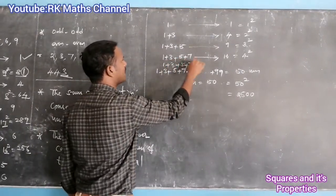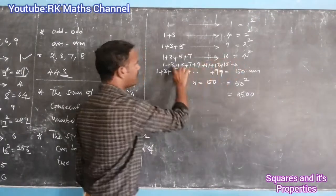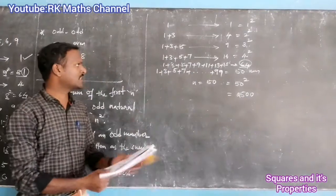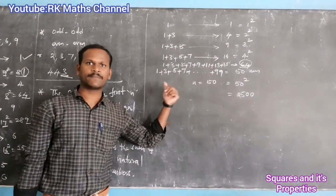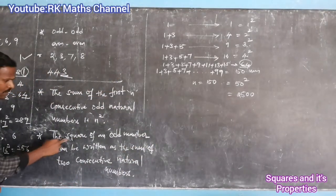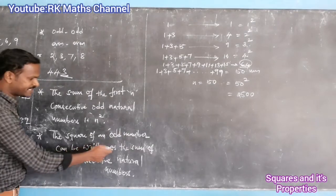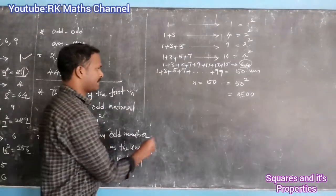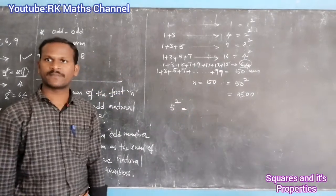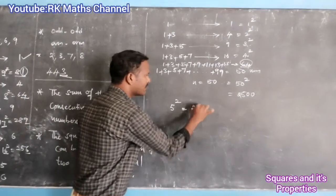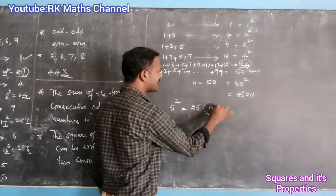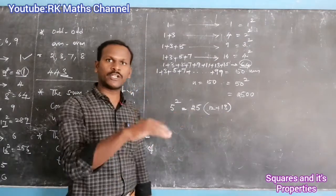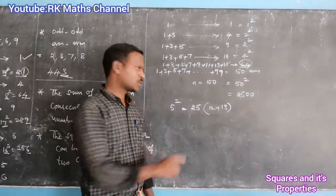For example: 1 plus 3 plus 5 plus 7 plus 9 plus 11 plus 13 plus 15 — that's 8 numbers, so the answer is 8 squared, which is 64. The next number after 20 would continue the sequence as 20 plus the next odd number.